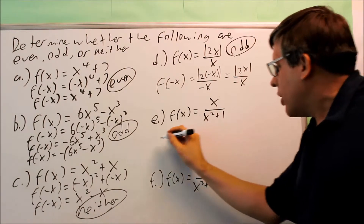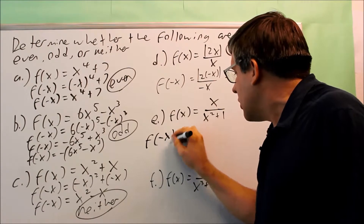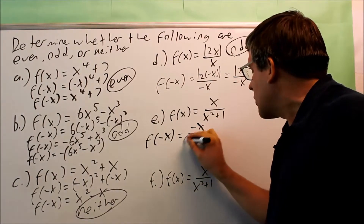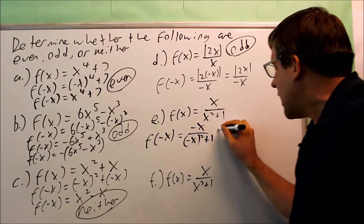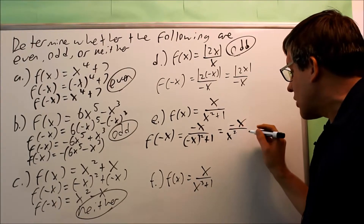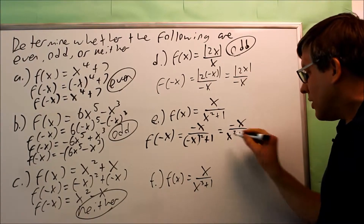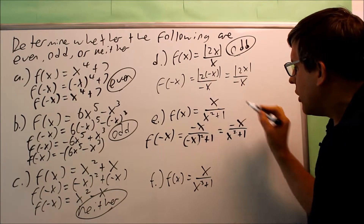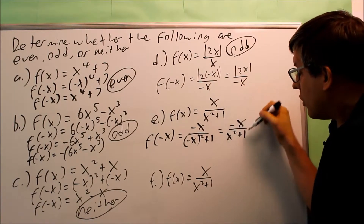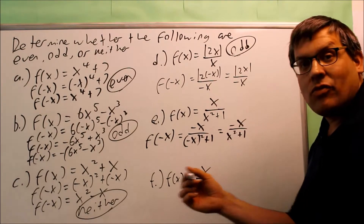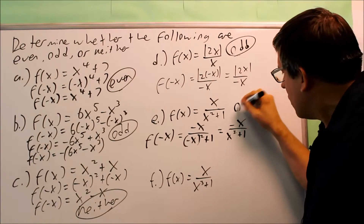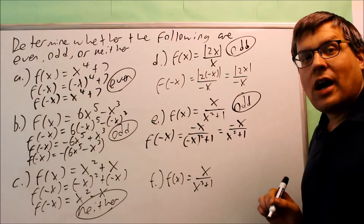For this one, I want to put negative x into both x's in the fraction, top and bottom. I get negative x on top and negative x squared plus 1 on the bottom. Simplifying, the negative squared gives positive x squared plus 1. This looks just like the original except for an extra negative in it — another case where you have negative times the original f of x. Because of that, this one is also going to be odd.